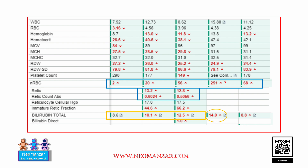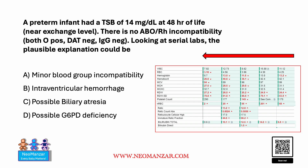The other thing to look at is the nucleated RBC — they were high to start with and trended down over time. The baby ultimately had fewer nucleated RBCs. And if you look at the retic count, it remained elevated. Keeping all this in mind, let's go back to the presentation and see if we can sort it out.